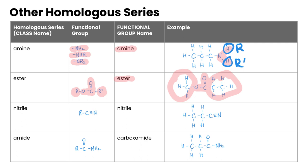Nitriles have a C triple-bonded to a nitrogen. Both the class name and functional group name are the same — it's called a nitrile, and here it is in our example. Finally, amides have a C double-bonded to an O which is then bonded to an amine group. The functional group is called a carboxamide, and you can see that in our example here.